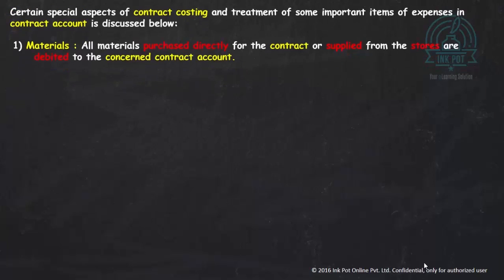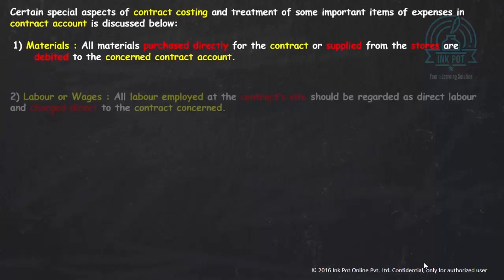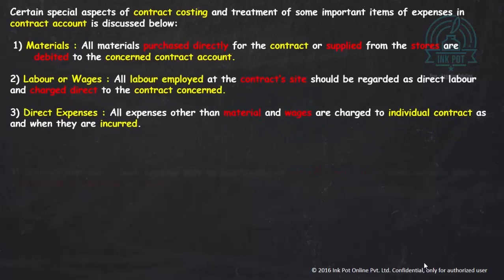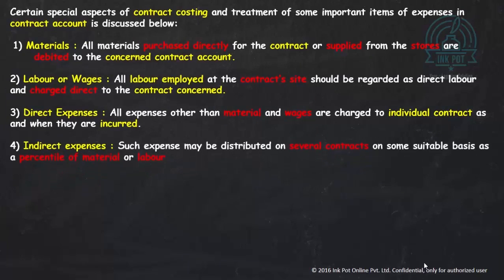In contract costing, we prepare a contract account. What we include in the contract account are material, labor, direct expenses, and indirect expenses. These are all expenses recorded on the debit side of the contract account. The contract account is always prepared in the books of the contractor.